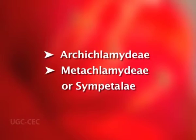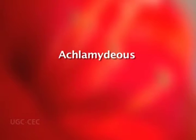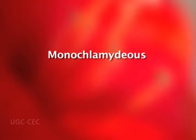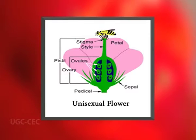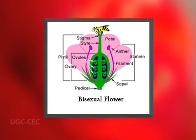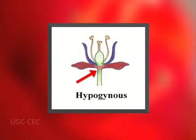The class Dicotyledons was divided into two subclasses: Archichlamydeae and Metachlamydeae (Sympetalae). Flowers without perianth (achlamydeous) or those with one whorl of perianth (monochlamydeous) were considered primitive, while those with two whorls of perianth — distinguished into sepalous and petalous — were considered advanced. Unisexual flowers were considered more primitive than bisexual ones. Cleistogamy was considered a more primitive character. The epigynous condition is more advanced than the hypogynous condition.